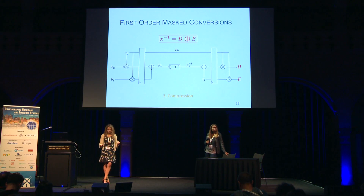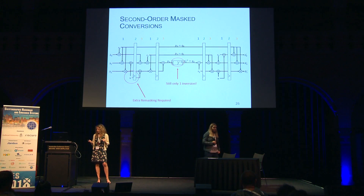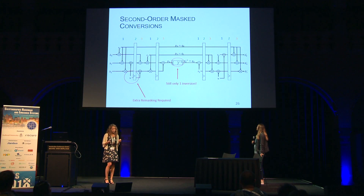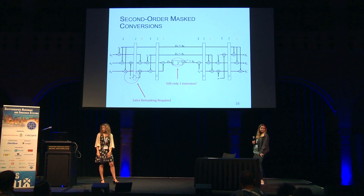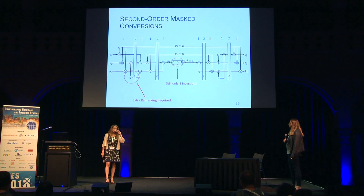Follow-up: the comparison with state-of-the-art is slightly unfair since prior schemes don't need that buffer. Response: agreed, but the overhead is considered negligible. Second question: for the inversion, is it done via the tower field or another method? We use the Boyar-Peralta representation because it's smaller. Regarding the multiplications — you need only one inversion independent of masking order, but you need many multiplications, which aren't cheap. Did you use a straightforward schoolbook GF(2^8) multiplication? Response: We used a pretty straightforward GF(2^8) multiplication and didn't spend much time optimizing it.